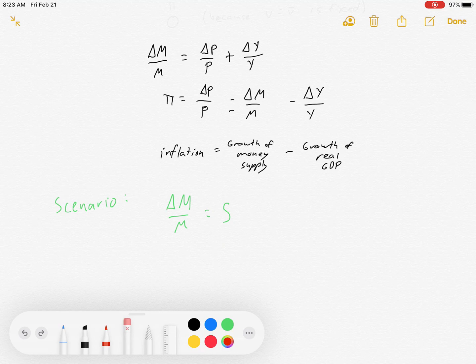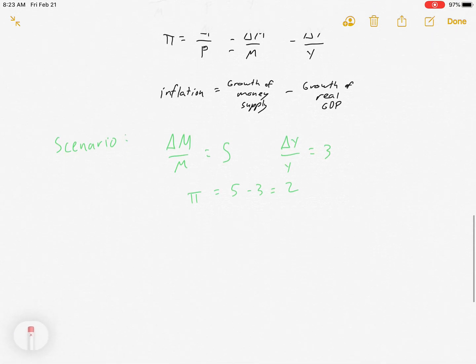So let's get a scenario here. For instance, money supply is growing at 5%, GDP is growing at 3% (real GDP, by the way), which means that inflation is 5% minus 3%, which is 2%. Great, nice and simple.